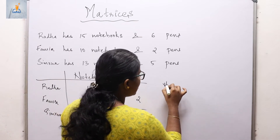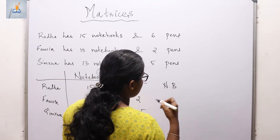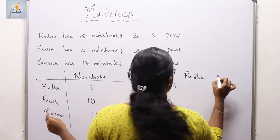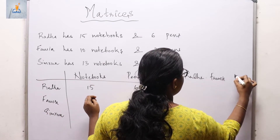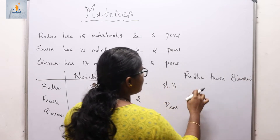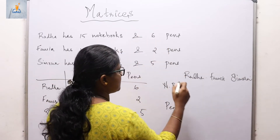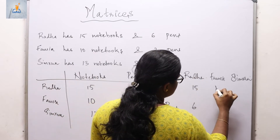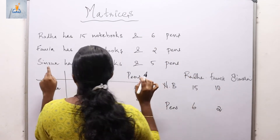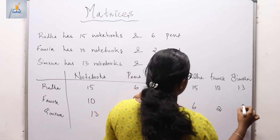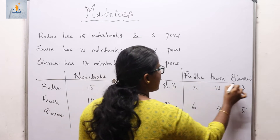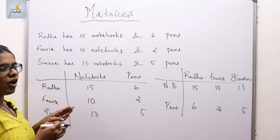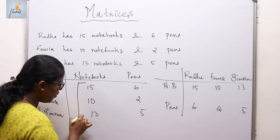In this second table, we have the number of notebooks and number of pens as column headers, and the persons — Rada, Fauzia, and Simran — as rows. Rada has 15 notebooks and 6 pens, Fauzia has 10 notebooks and 2 pens, and Simran has 13 notebooks and 5 pens. This is another tabular representation of the same data. Now I am going to put the numbers into a rectangular box.